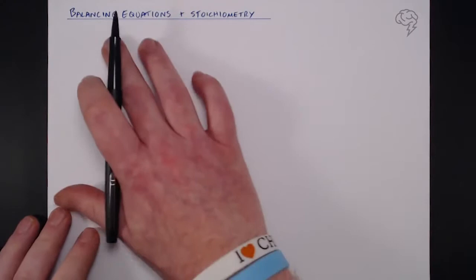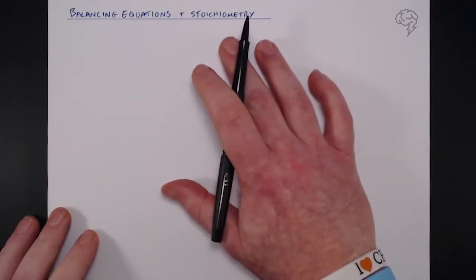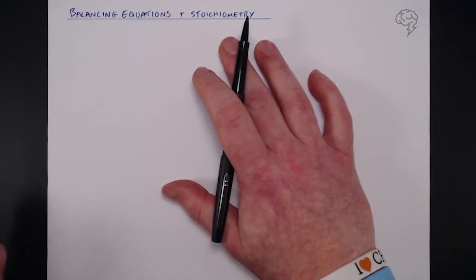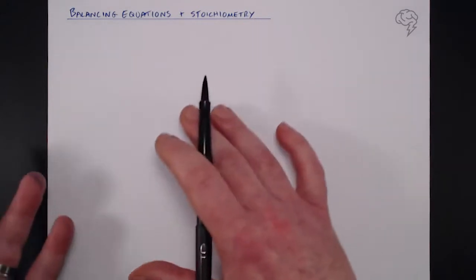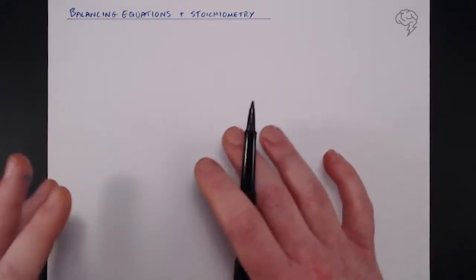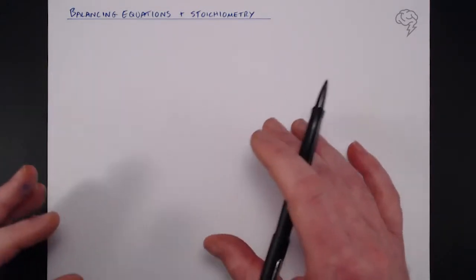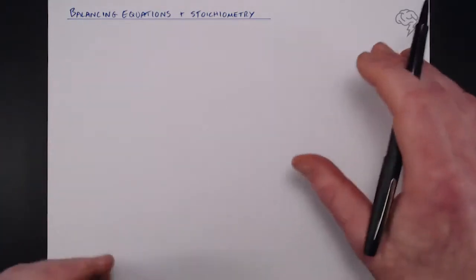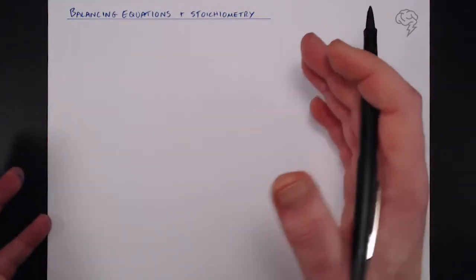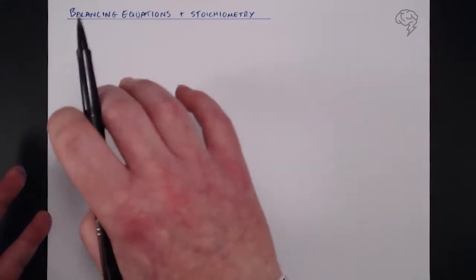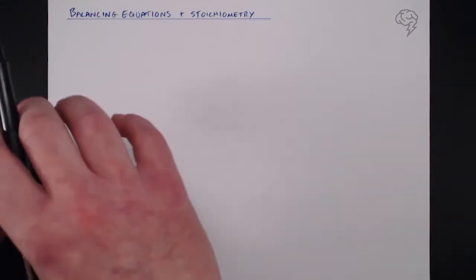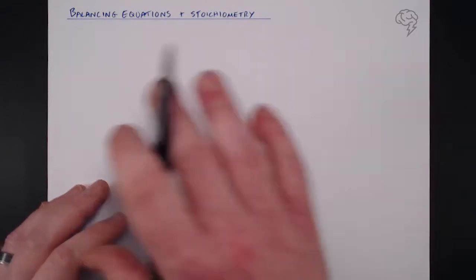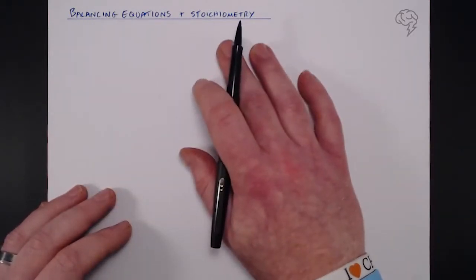What we're going to do now is look at balancing equations and the stoichiometry associated with it. You can calculate number of moles using mass and molar mass, and concentration using number of moles and volume. But very rarely will you get a question that just asks for the number of moles or concentration directly — they'll ask you to use an equation to find the number of moles of something else. That's where balancing equations and stoichiometry come into play.